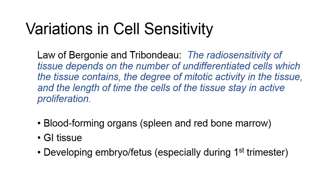Let's talk about variations in cell sensitivity. Certain cells are more sensitive to radiation. For example, cells which are rapidly dividing or have potential for rapid division are more sensitive than those which do not divide. And cells which are non-differentiated — for example, primitive or non-specialized — are more sensitive than those which are highly specialized. The factors which generally influence the radiosensitivity of cells and tissues were recognized as early as 1906 by two French scientists. Their findings are expressed in the Law of Bergognier and Tribondieu, which states: the radiosensitivity of tissues depends on the number of undifferentiated cells which the tissue contains, the degree of mitotic activity in the tissue, and the length of time the cells of the tissue stay in active proliferation.